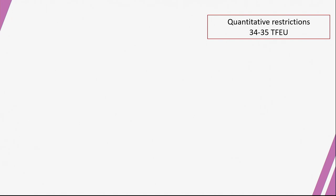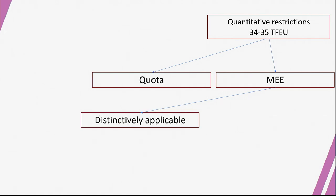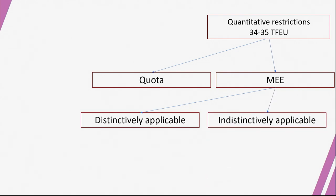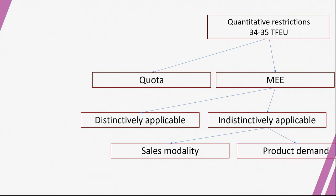To summarize: quantitative restrictions are forbidden under Articles 34 and 35 TFEU. They include literal quotas, which are forbidden and barely used in the EU, and more hidden measures having equivalent effect. MEEs can be subdivided into distinctively applicable measures — which directly aim at import or export of products — and indistinctively applicable measures — which do not directly aim at foreign products but have the practical effect of discriminating against them. Indistinctively applicable measures are further subdivided into sales modalities and product requirements, with countries having more freedom regarding sales modalities.